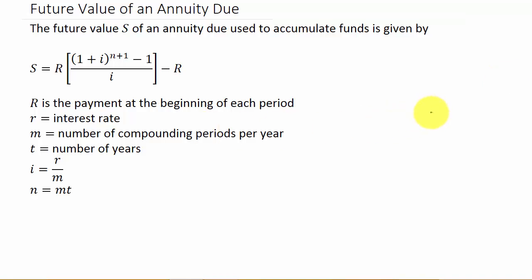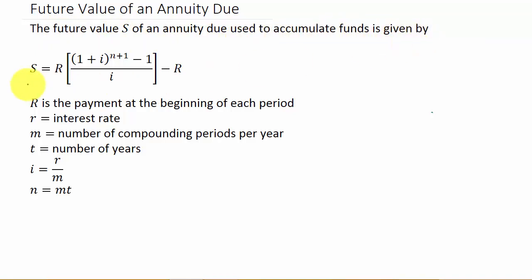So the future value of an ordinary annuity, the payments are made at the end of each period. And the future value of an annuity due, the payments are made at the beginning of each period. The formula is a little bit different. S, which is the future value of an annuity due used to accumulate funds, is given by S equals R times 1 plus I to the N plus 1, minus 1, divided by I.